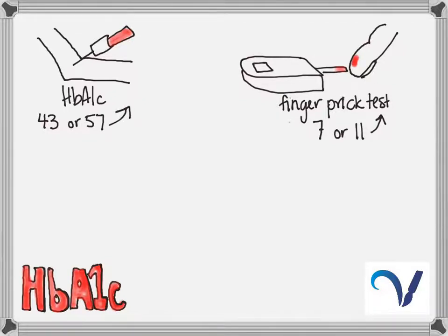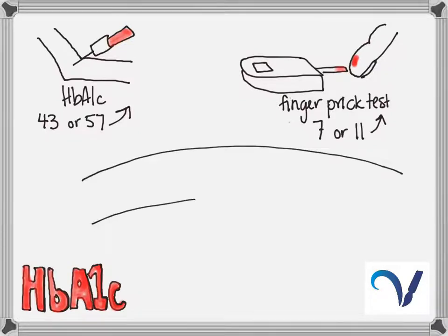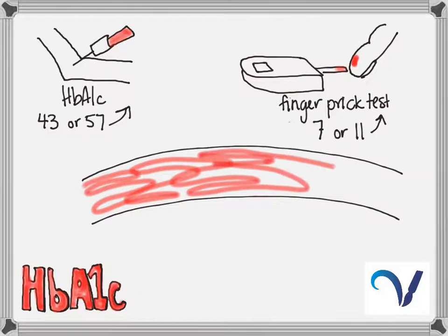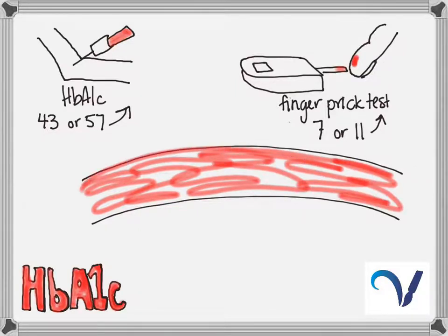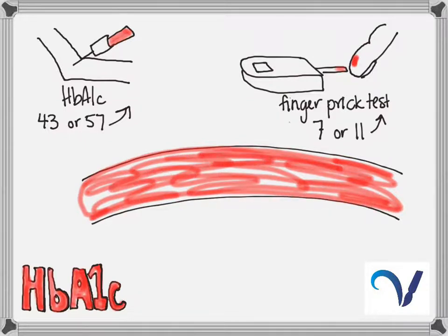Now the reason that there is a difference between these two tests is that they measure different things. In your bloodstream, you have the juice or plasma that travels around in your bloodstream and carries everything around in it. So when you eat something and it gets converted to sugar that travels around in the juice that's in your bloodstream. The other thing that you have in your blood is red cells.